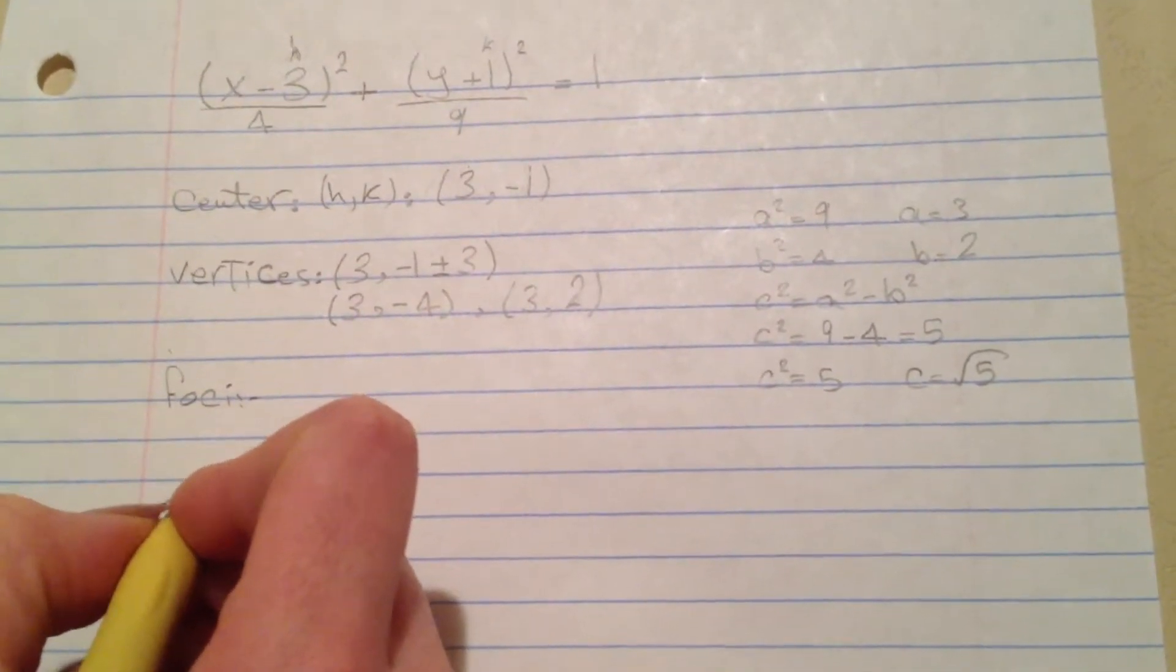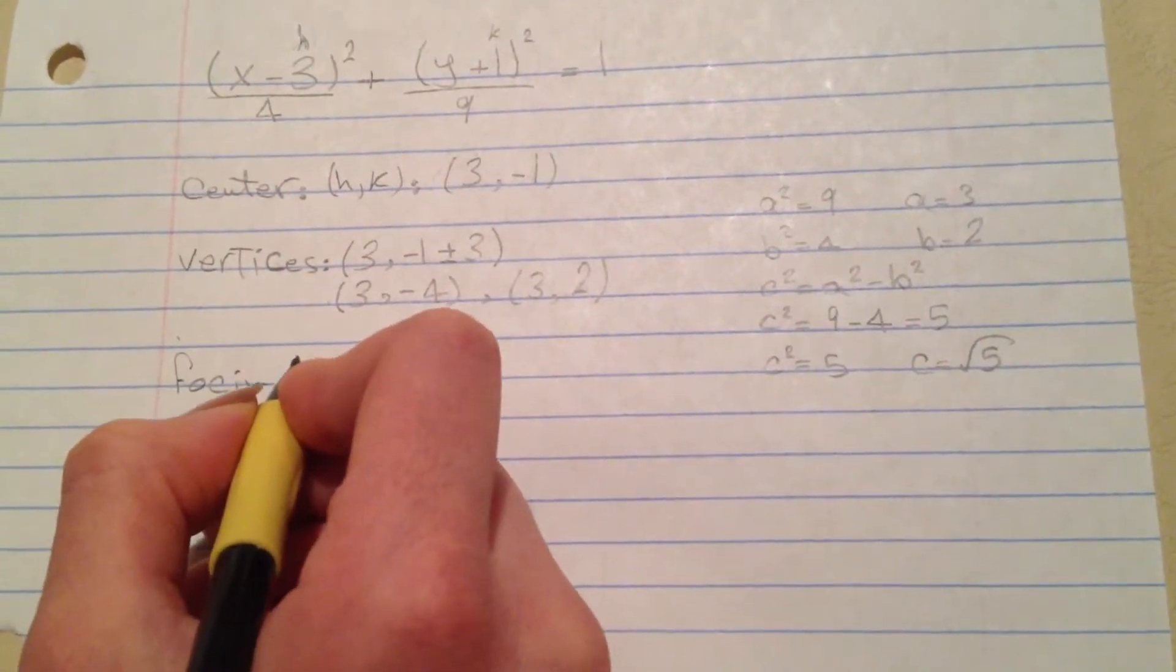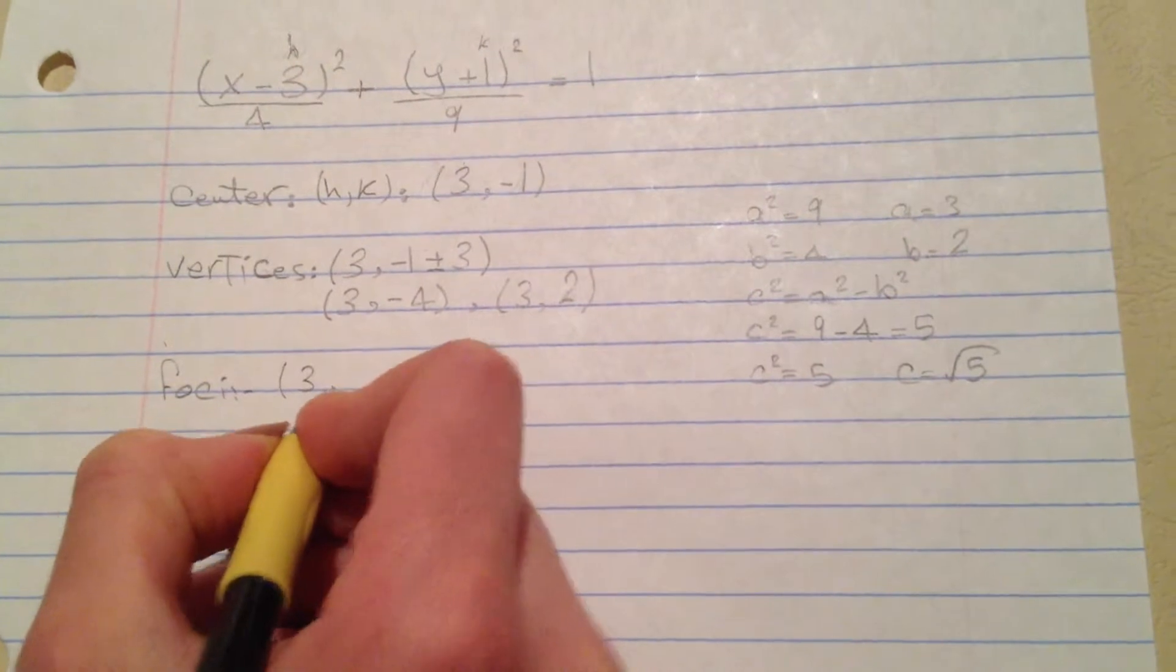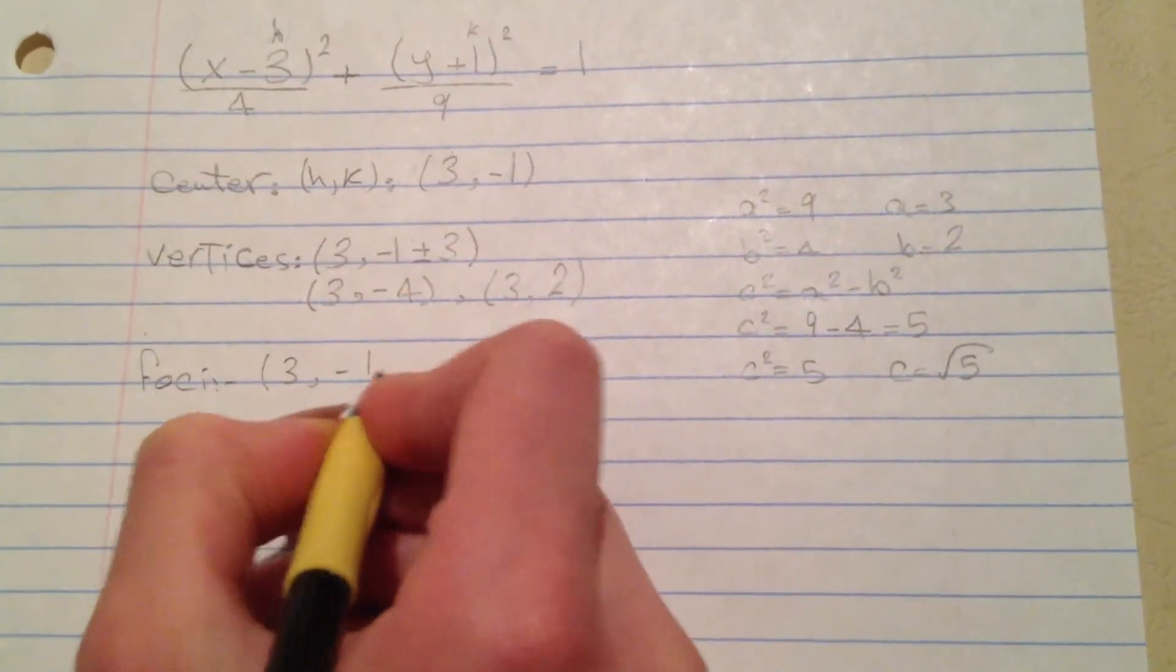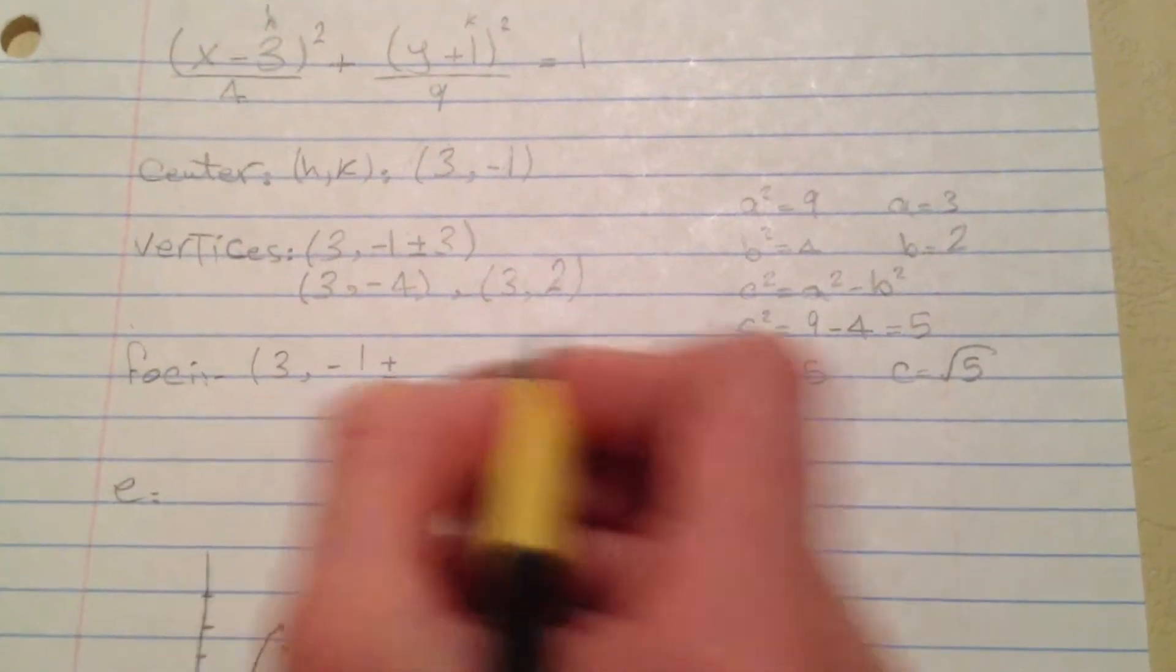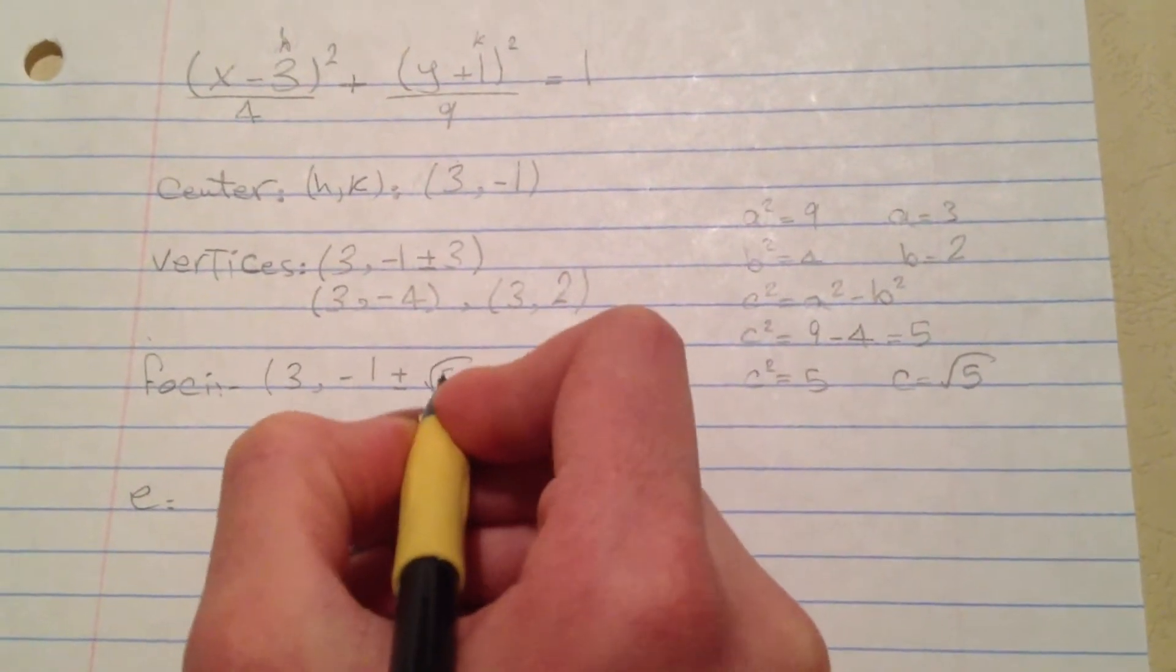To find the foci I'm going to use 3 comma negative 1 plus or minus c which we have at square root of 5.